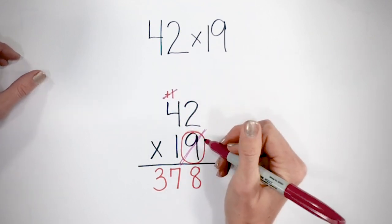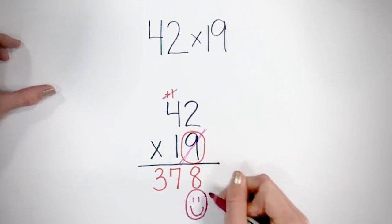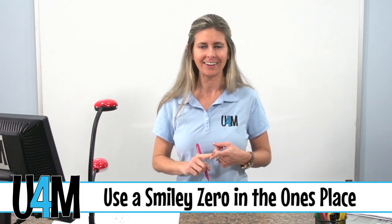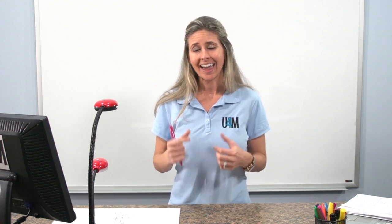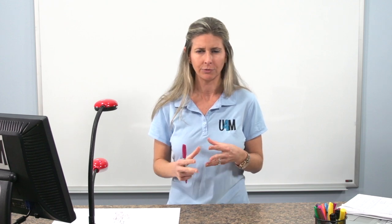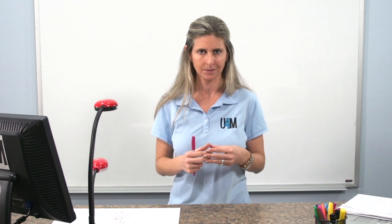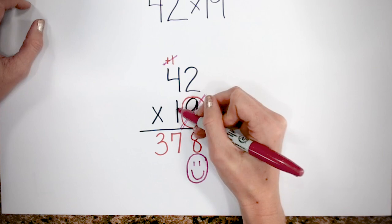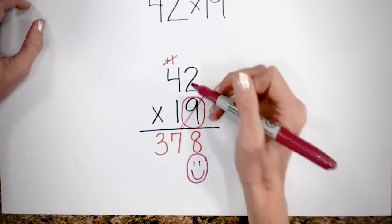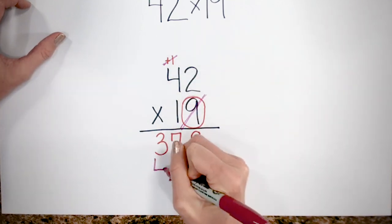I like to say 'done with the ones.' So I'm going to put my zero placeholder here. I like to put a smiley face in the zero placeholder because when we're done with the ones in that place value, we're happy. It also helps students remember that it is a zero placeholder and not to get confused if we have another zero that may come from when we multiply the tens place by our next numbers. Now let's multiply the tens place by each number up top. One times two is two. One times four is four.